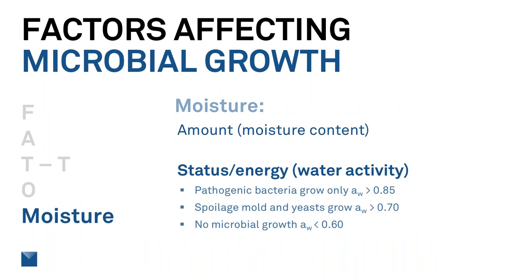Lastly, moisture. We measure moisture amount as moisture content, but we're most specifically interested in the status or energy of water, which is the same as water activity. The higher the water activity, the more it's able to do — whether moisture migration or microbial growth. Pathogenic bacteria grow only at water activities above 0.85. Spoilage molds and yeast grow at water activities above 0.70. And there is no microbial growth at all below 0.60.